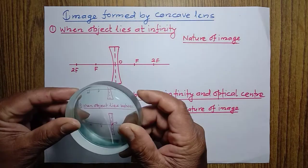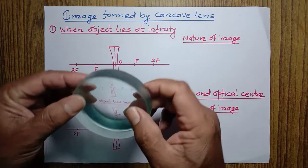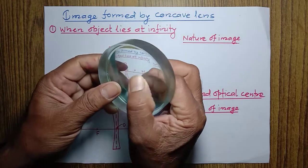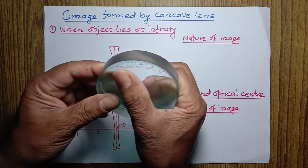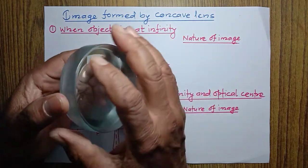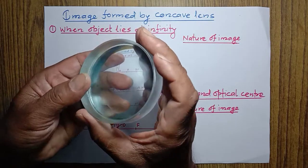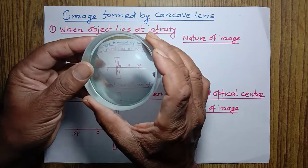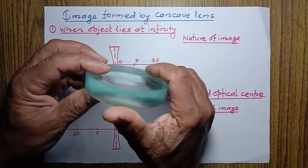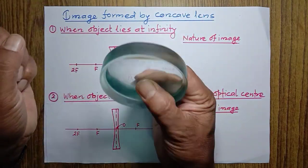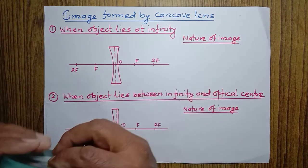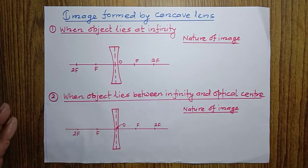This is a concave lens, which is thinner in the middle and thicker at the edge. As told in previous classes, today I am going to talk about the images formed by a concave lens.